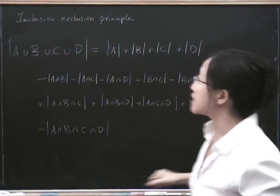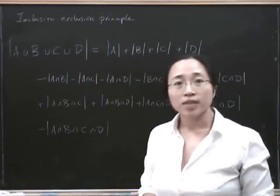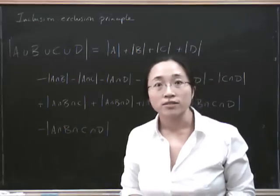So that's why it's called the inclusion-exclusion principle. It's just a fancy way of saying how you count things in a union of sets.